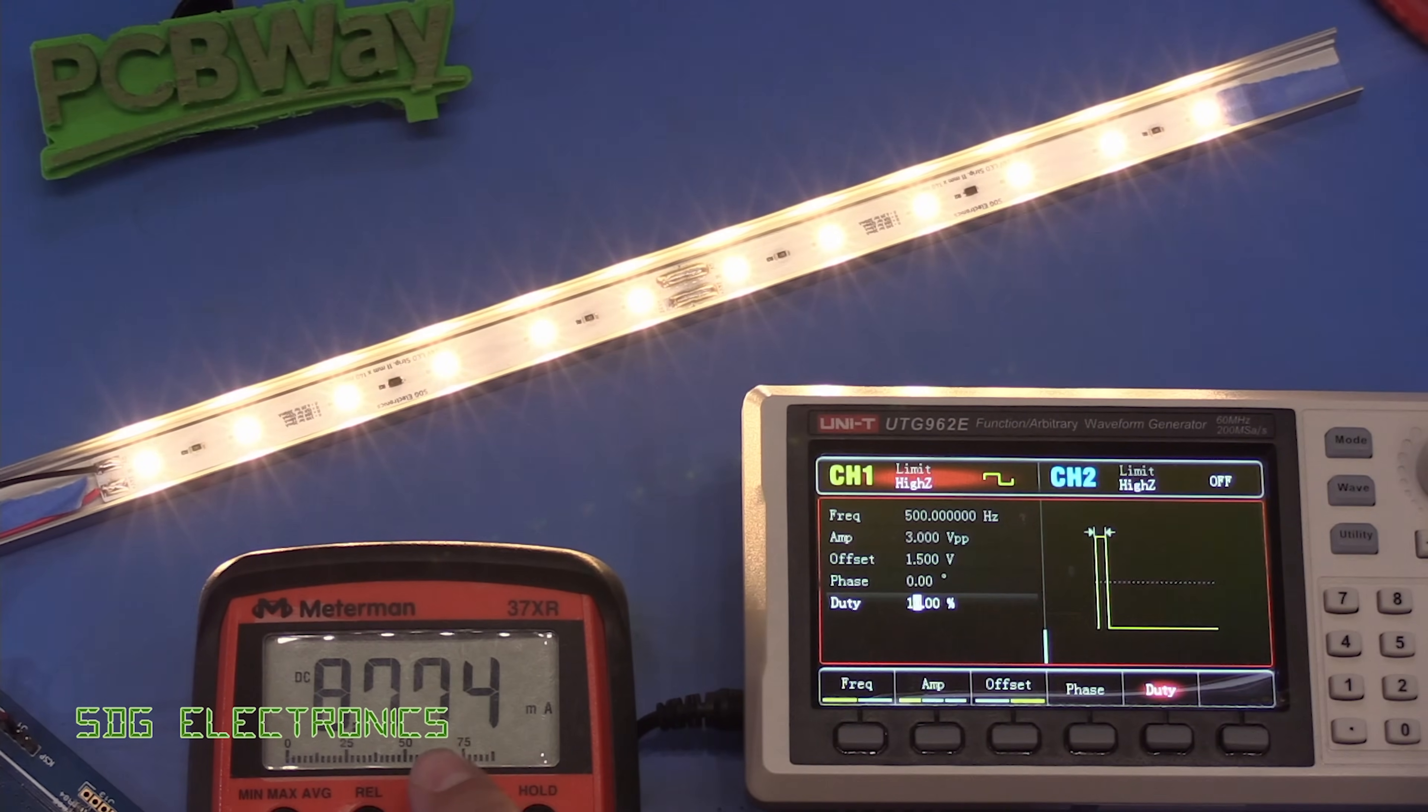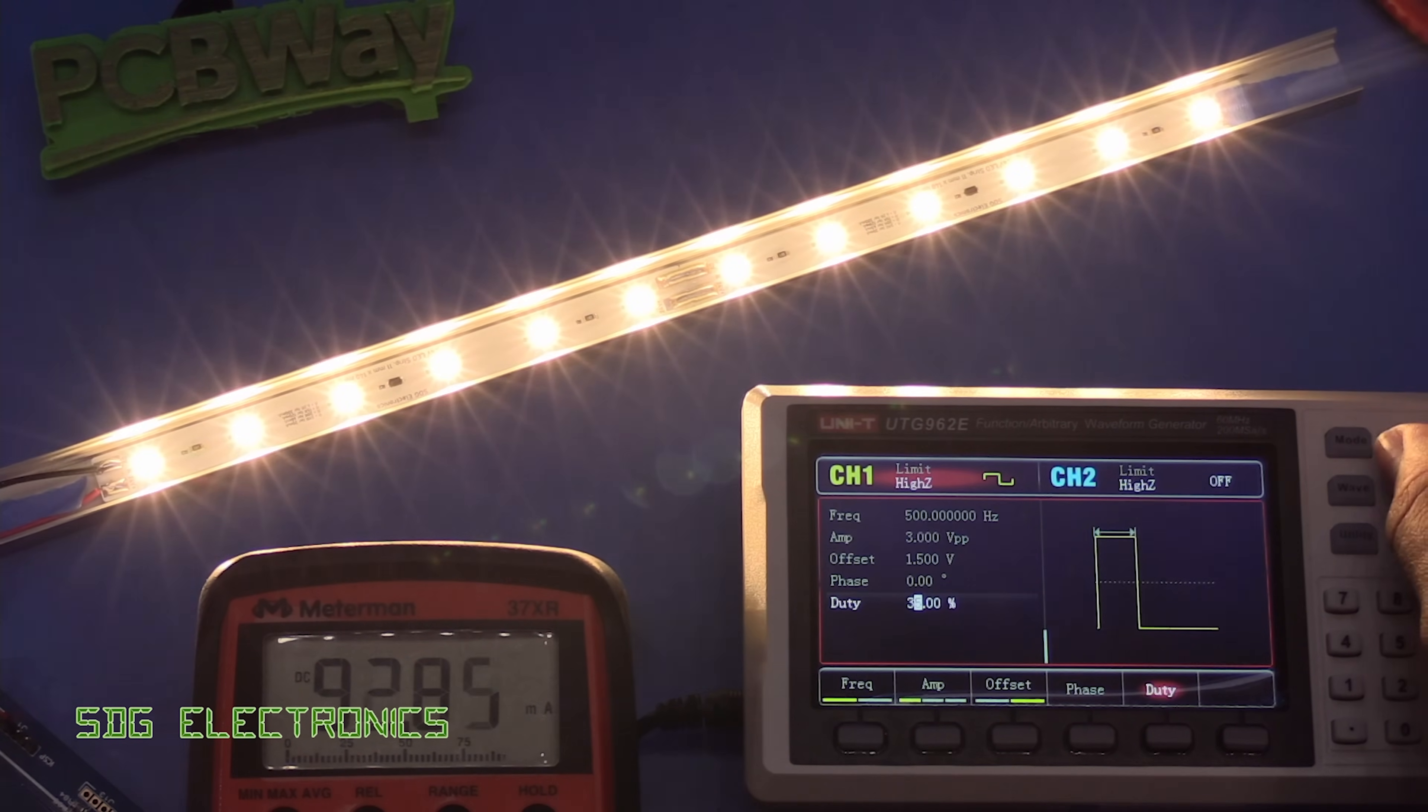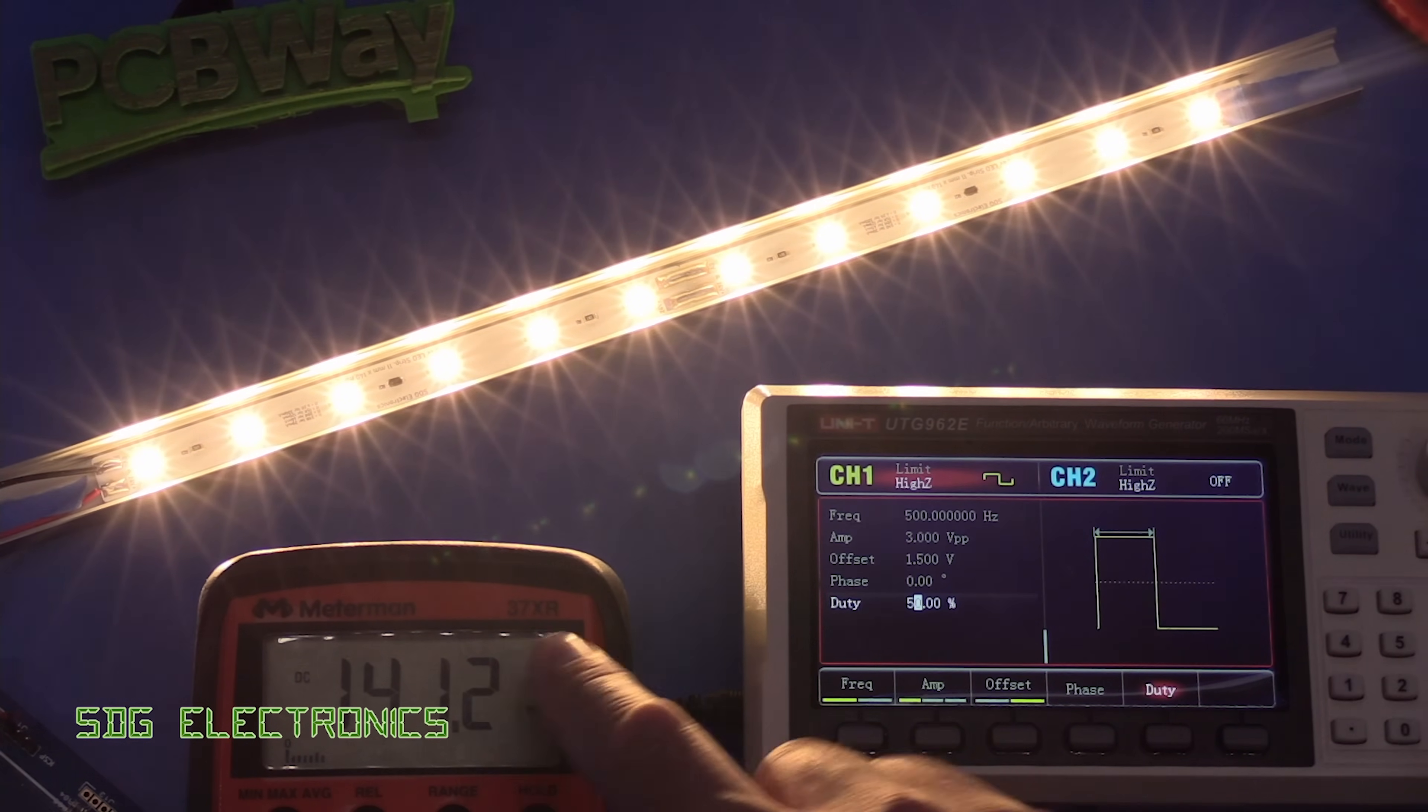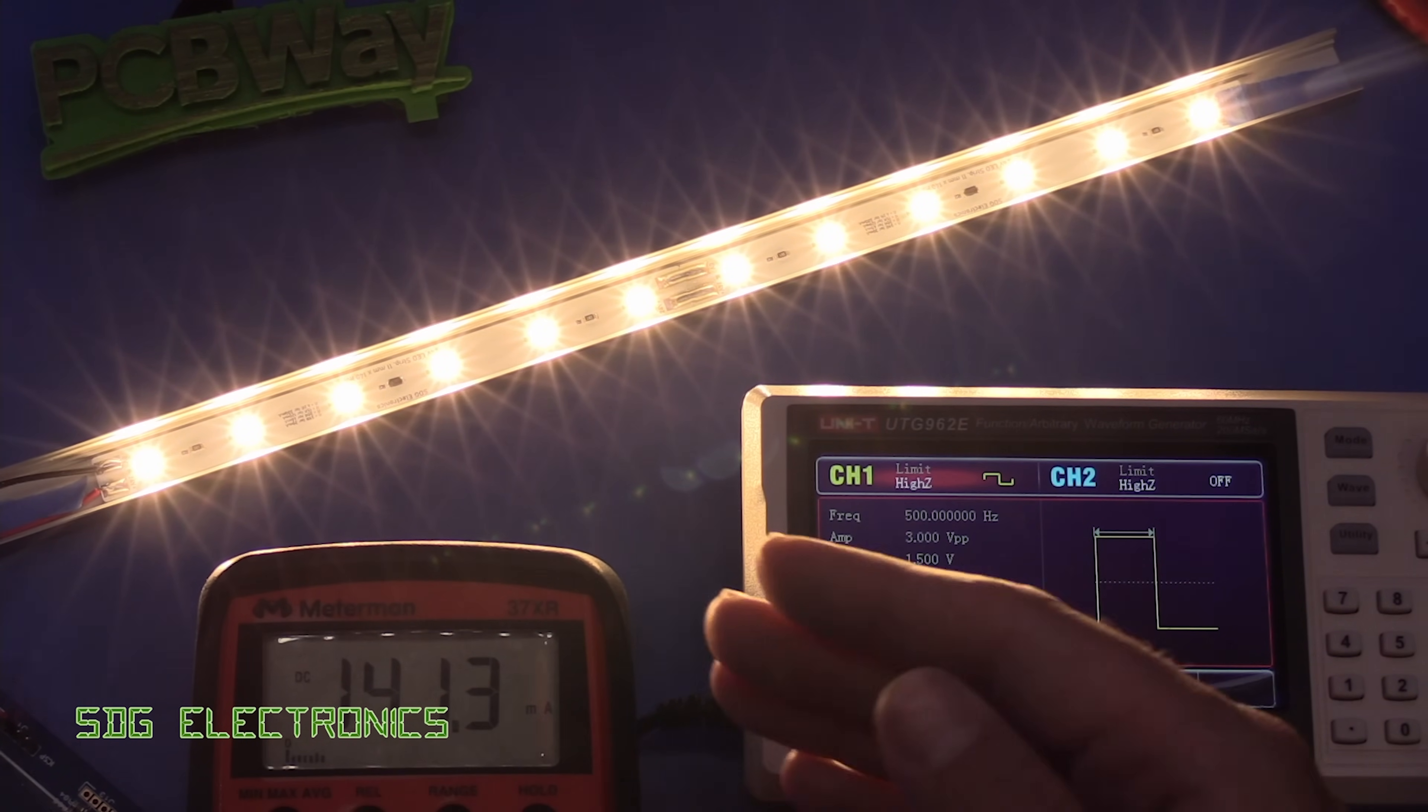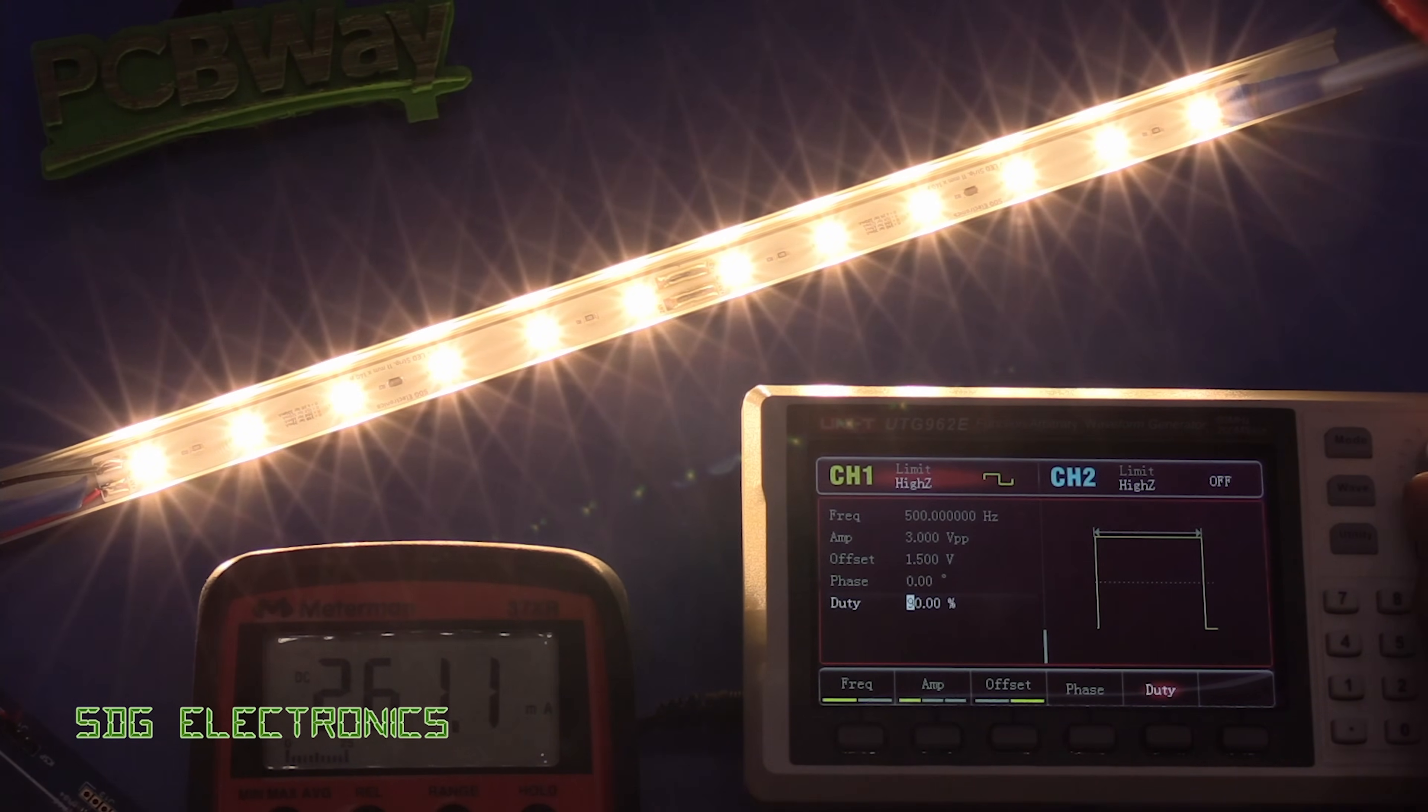and if we increase the duty cycle here at 500 hertz we're at 10 percent here and at 10% we should be reading 30 milliamps but we're off down at 10 milliamps, 50 percent duty we're at 141 whereas we'd normally be at 150